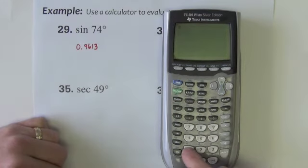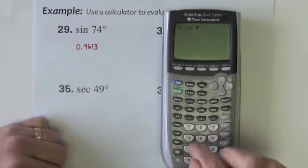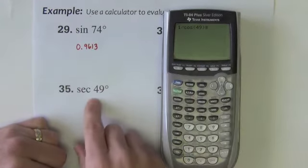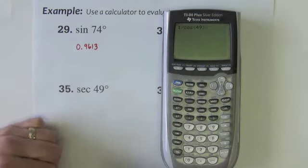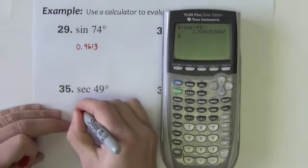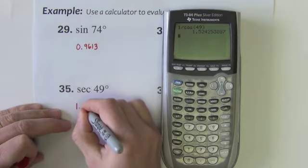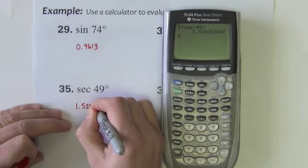So if I do the reciprocal which is 1 divided by cosine. So 1 divided by cosine of 49 would be secant of 49. And again to four decimal places I have 1.5243.